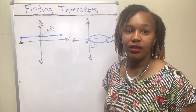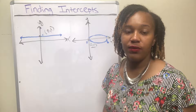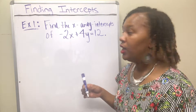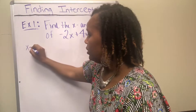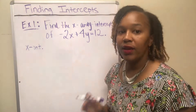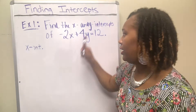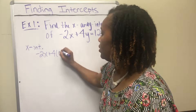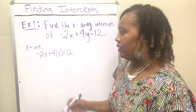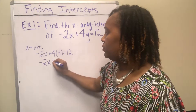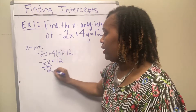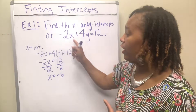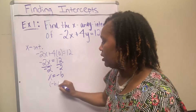Now let's look at how to find the x and y intercepts from an equation. For example one, we want to find the x and y intercepts of negative two x plus four y equals twelve. Starting with the x intercept, we let the opposite variable equal zero — so we let y equal zero and solve for x. Four times zero is zero, which leaves us with negative two x equals twelve. Dividing by negative two gives x equals negative six. So this graph crosses the x axis at negative six comma zero.